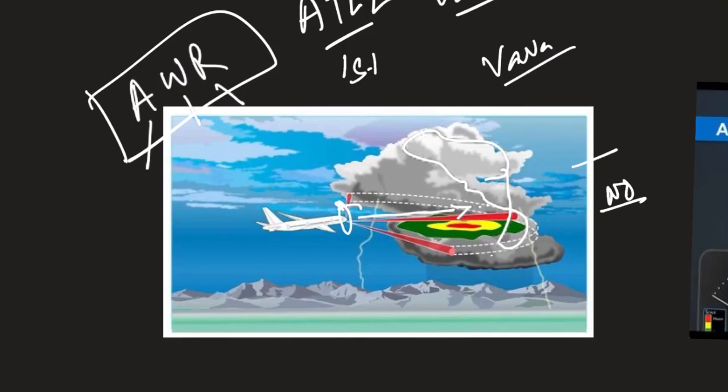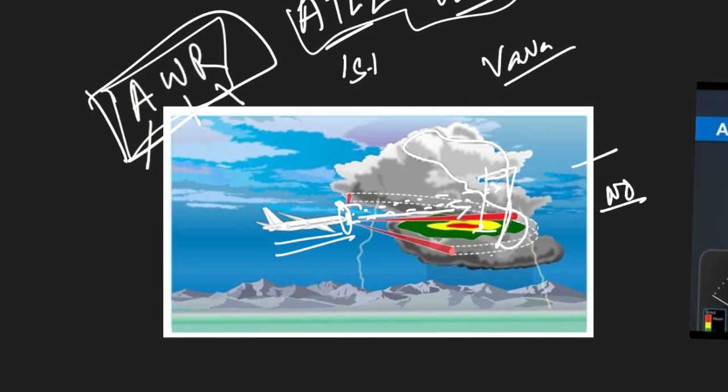Today we will study about airborne weather radar for your ATPase Viva exam. Airborne weather radar is a primary radar. What does primary mean? That means the source where the signal emanates, it reflects and comes back to the source itself. There is no other equipment here.